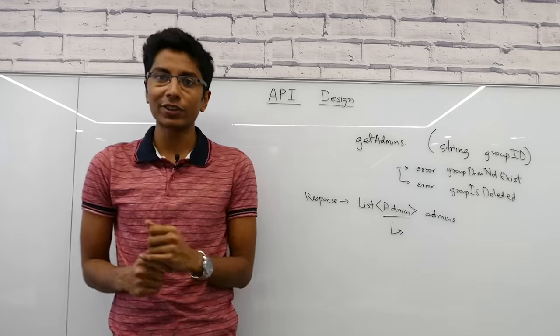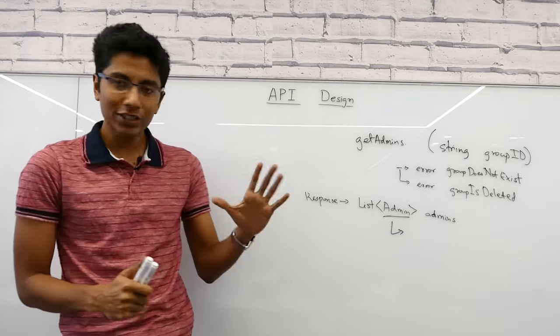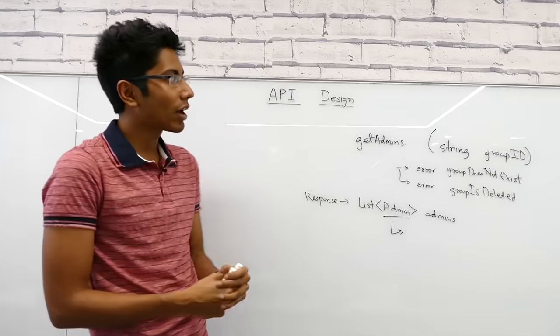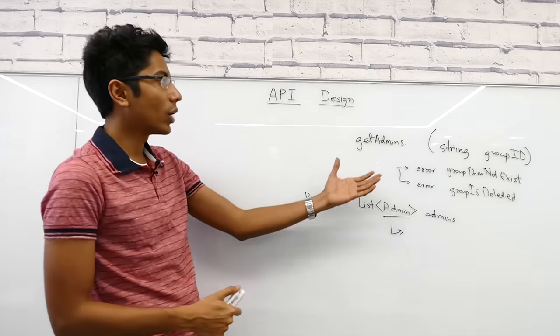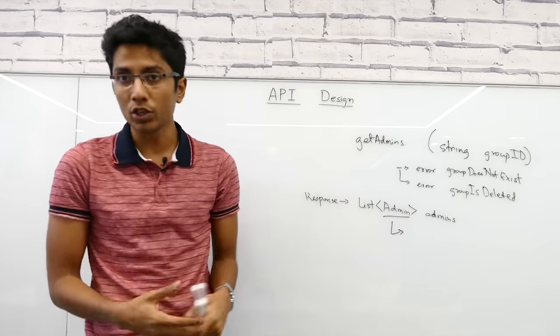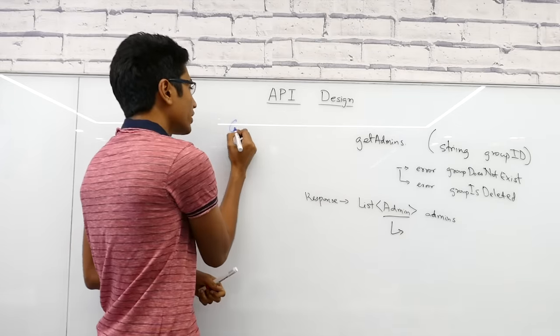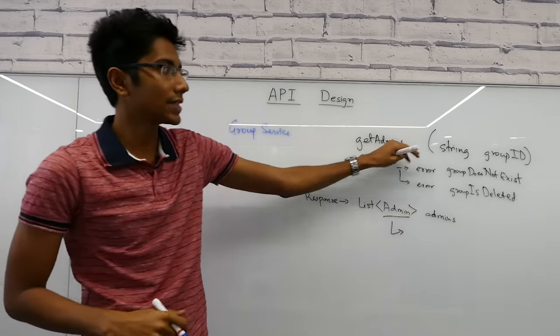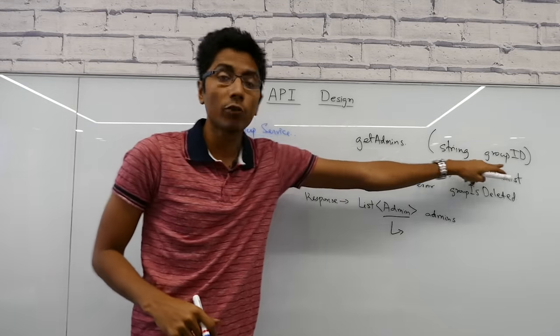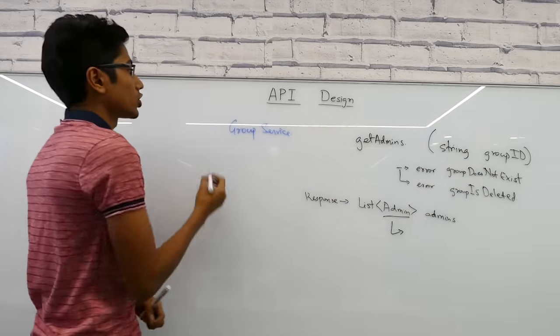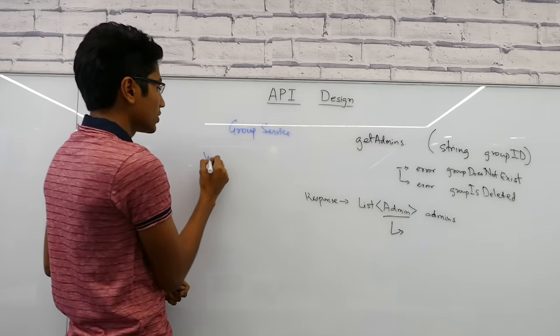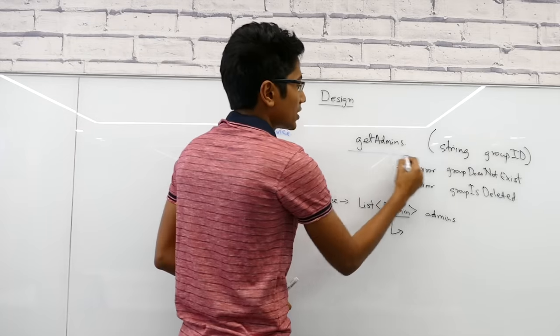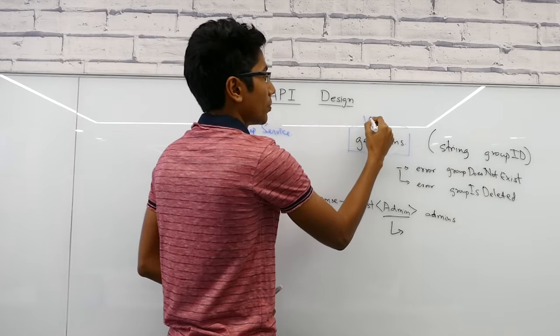There's a useful checklist of things to run through. The first thing is where should this function be exposed? If you have a microservice architecture and you have a service which is a group service that handles everything related to groups, that is where this API belongs because this is something to do with finding all the admins of a particular group. The first question we ask ourselves is where does this belong?